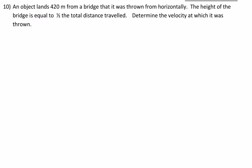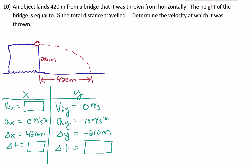An object lands 420 meters from a bridge from which it was thrown horizontally. The height of the bridge is equal to half the distance it traveled. Determine the velocity at which it was thrown. I've drawn a bridge with water under it and the object being thrown horizontally to land 420 meters away. The height is half of 420, so the height is 210 meters.